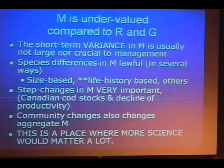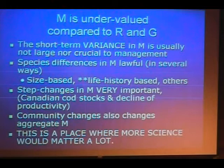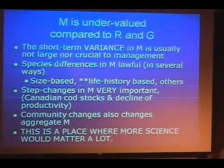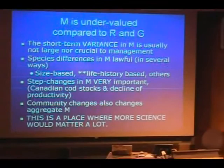The short-term variance in M from year to year doesn't matter all that much. The species-by-species differences in M can matter a lot to figuring out what the sustainable exploitation rate should be for the suite of species being impacted directly or indirectly by fishing. But there's a lot of really nice work on life history theory, size-based modeling and stuff. I would expect some of the people who've done some of the best work, like Simon, may show us some of it over the next couple days.